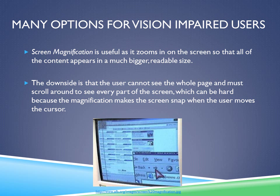One of the options is screen magnification. Screen magnification is useful as it zooms in on the screen so that all of the content appears in a much bigger and readable size. The downside is that the user cannot see the whole page and must navigate around to see every part of the screen, which can be very difficult because the magnification makes the screen snap whenever the user moves the cursor. This happens because it's zoomed in on such a small portion that when they try to scroll, the screen just completely moves, making it really difficult to navigate the pages.